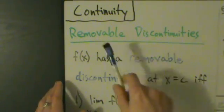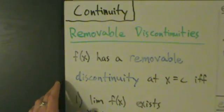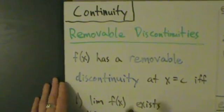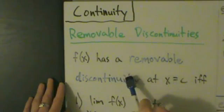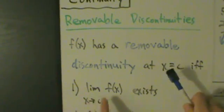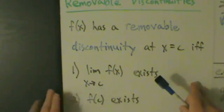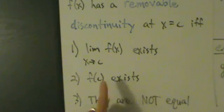So the first type we'll talk about is a removable discontinuity, sometimes also called a hole informally. But anyway, f(x) has a removable discontinuity at x equals c if and only if: one, the limit as x goes to c of f(x) exists; two, f(c) also exists; and three, they're not equal.